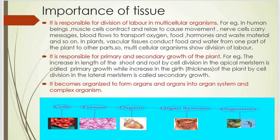For example, the increase in length of the shoot and root by cell division in the apical meristem is called primary growth. While the increase in girth or thickness of the plant by cell division in the lateral meristem is called secondary growth.